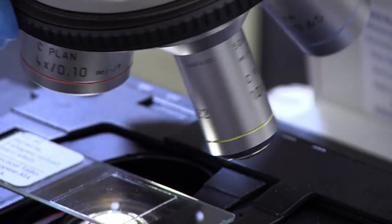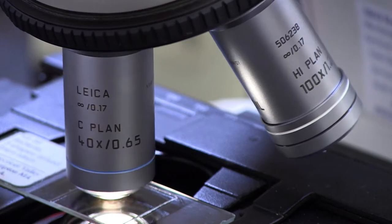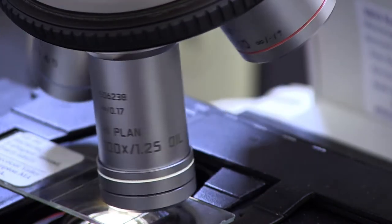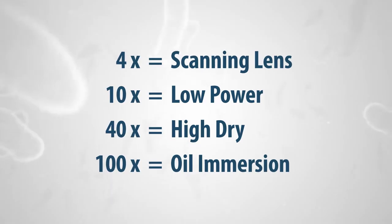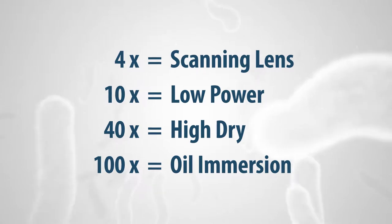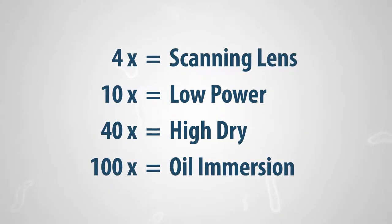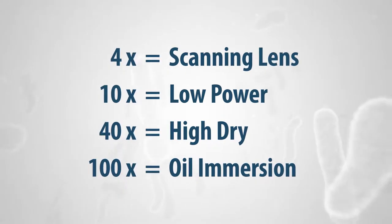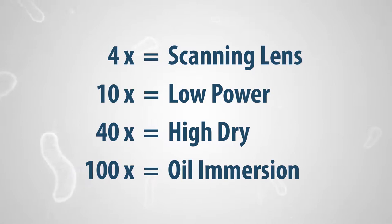Objective lenses, the second lens system of the light microscope, are found just above the stage. The three or four objectives are attached to a revolving nose piece that allows the lenses to be rotated into position. The four objectives have magnifications of 4x, 10x, 40x, and 100x designated as scanning lens, low power, high power, and oil immersion respectively.